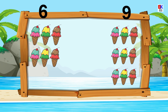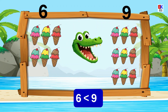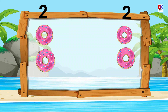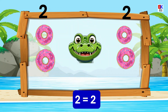Now we have six ice cream cones on one side and nine ice cream cones on the other. Yes, six is less than nine — brilliant! Two doughnuts on each side. Two is equal to two — splendid!